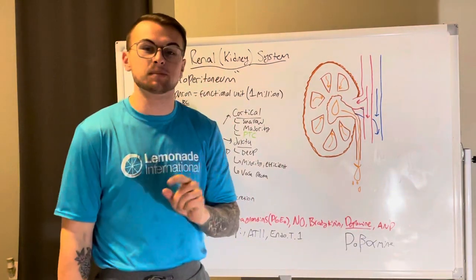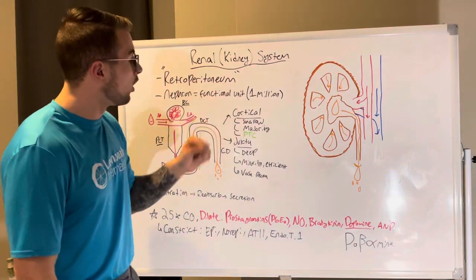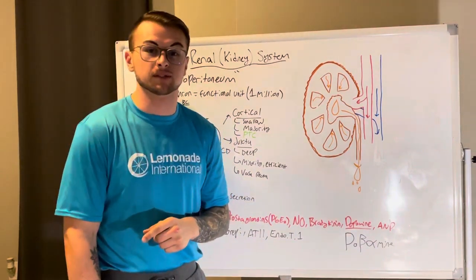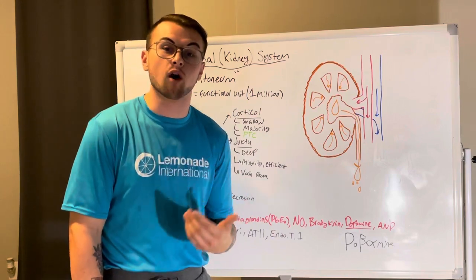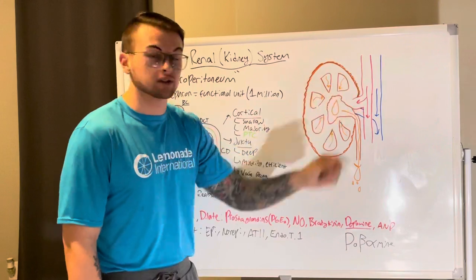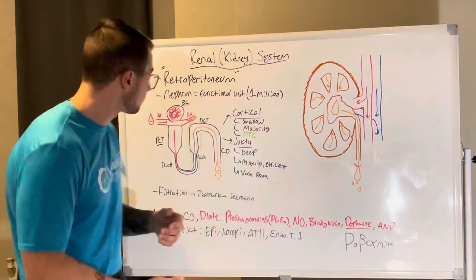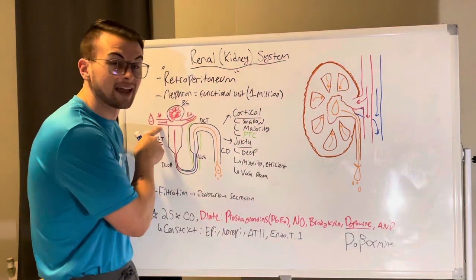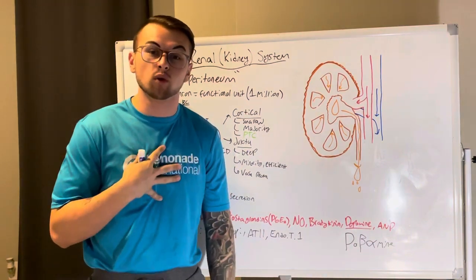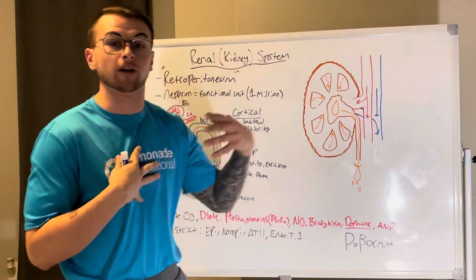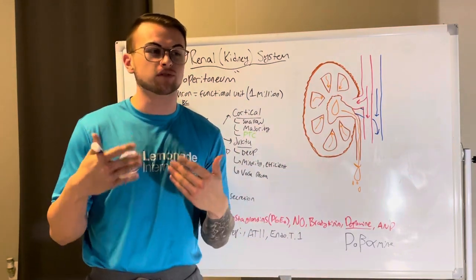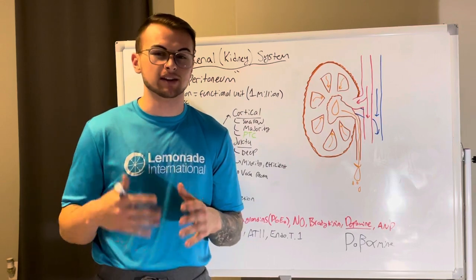There are two types of nephrons: cortical nephrons and juxtamedullary nephrons. Now, blood coming into the kidney actually goes through an afferent arteriole. Afferent means coming towards us, while efferent means going away.